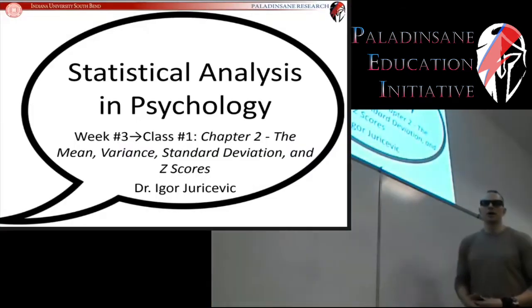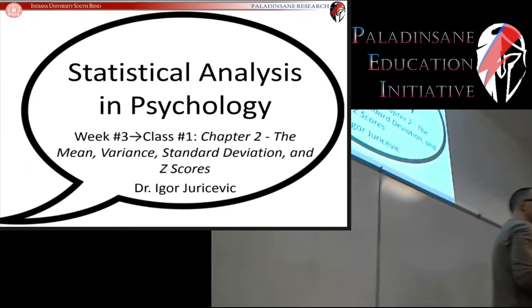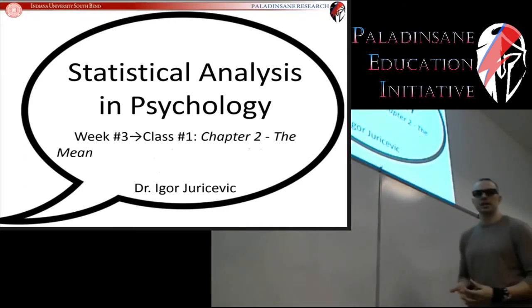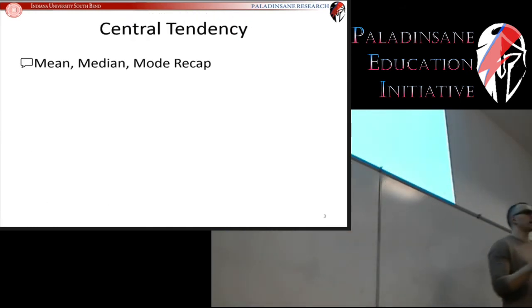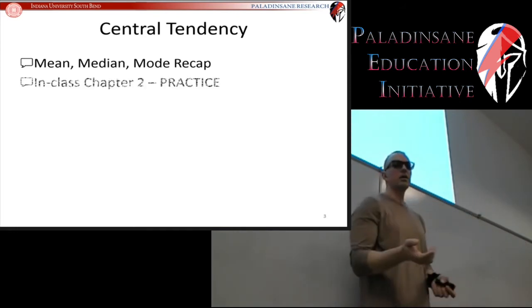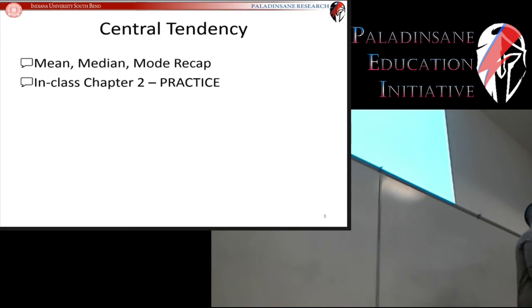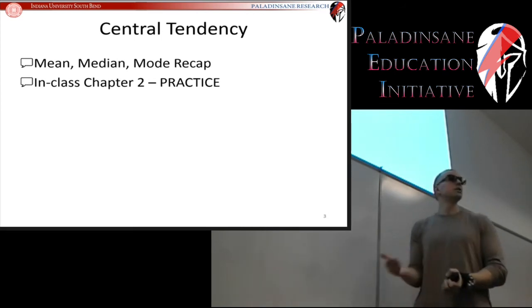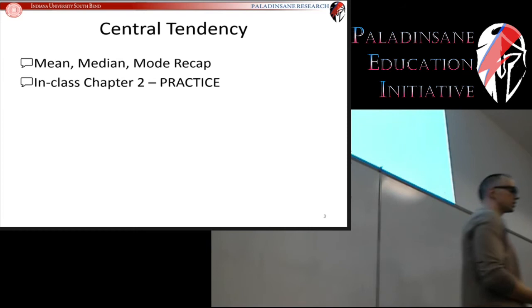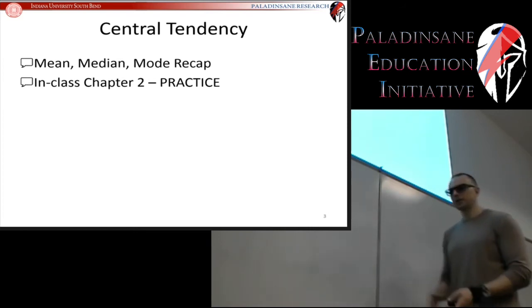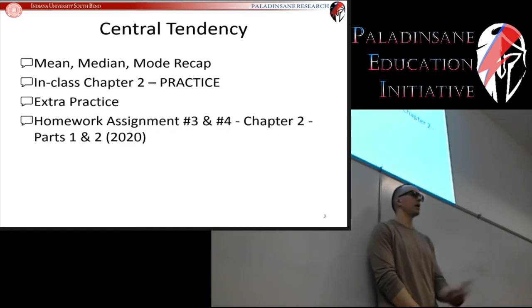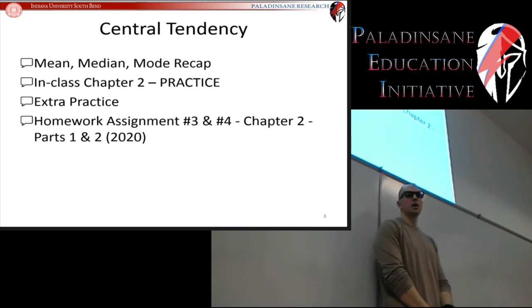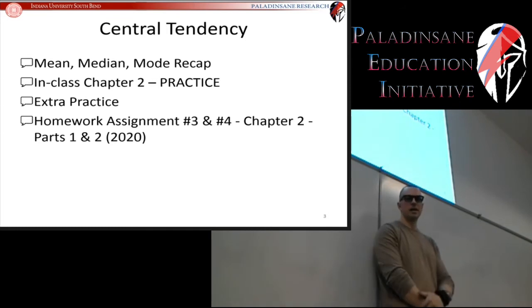Continuing on from last time in chapter two, we introduced the idea of central tendency and the mean. This time, we're going to do a very quick recap of the mean, median, and mode, then do some in-class practice. We're going to see how to calculate all of this using Excel, and I'll teach you some shortcuts to speed up your Excel skills. Then we'll have time for extra practice and I'll make a note about the homework assignment.